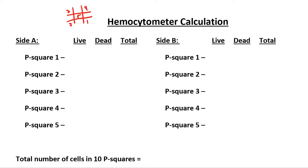When we counted our first P-square on side A, we had 97 live, zero dead for a total of 97 total cells. We counted P-square number two on side A, we got 109, zero dead, therefore 109 total cells. We had one dead cell in P-square three, giving me a total of 73 cells, 101, 0, 101, and 124, 0, 124.